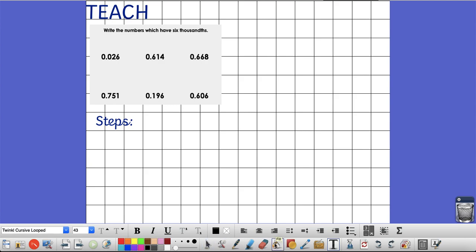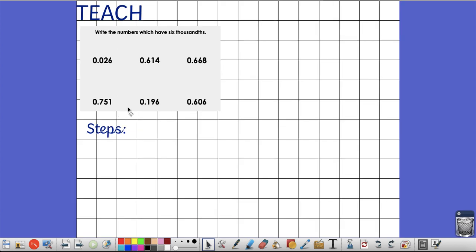So, your answer should have been, you should have wrote down 0.026, you should have wrote down 0.196 and 0.606. Well done if you've got those correct.